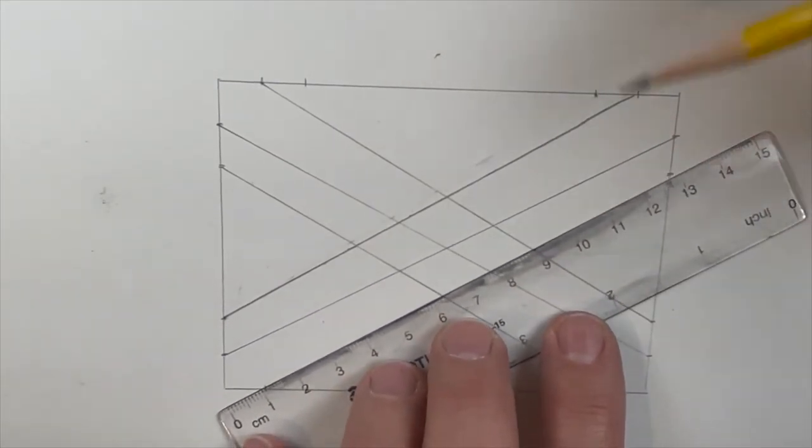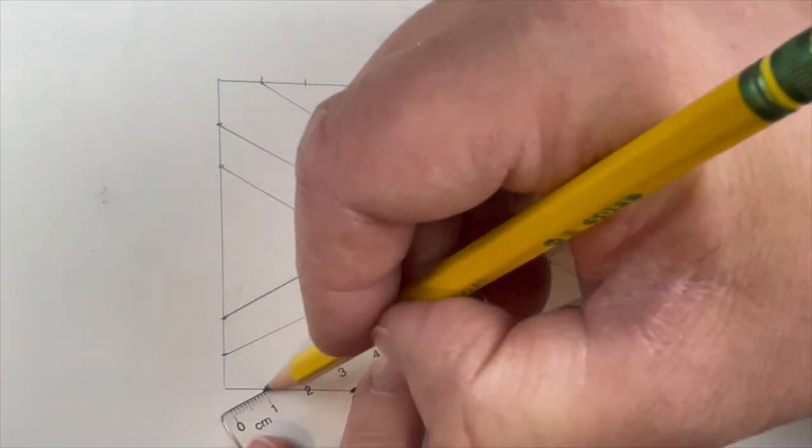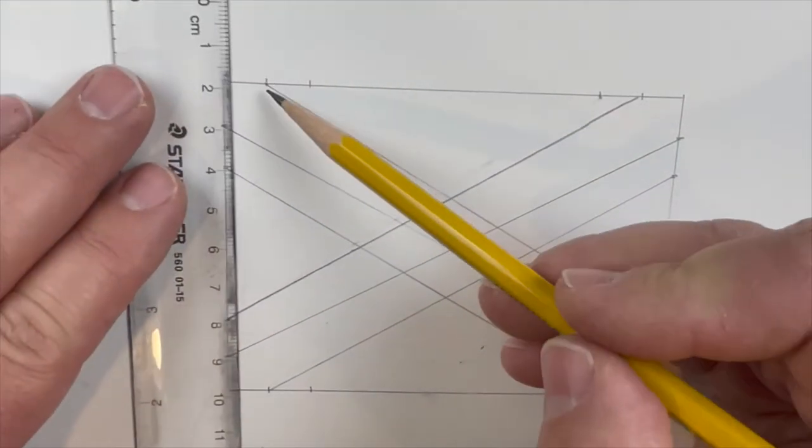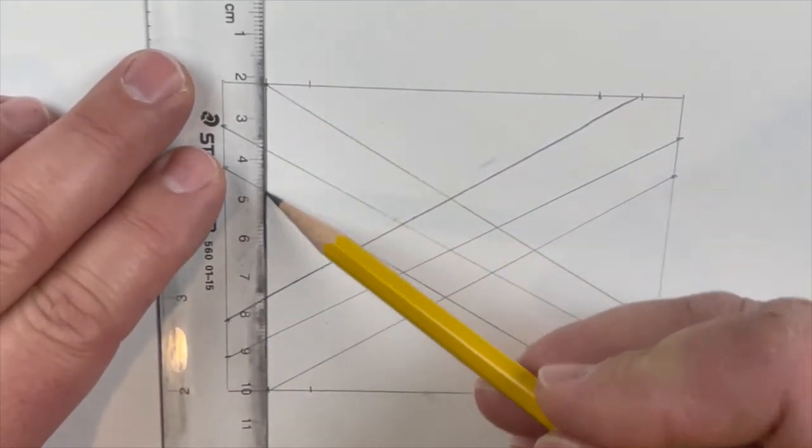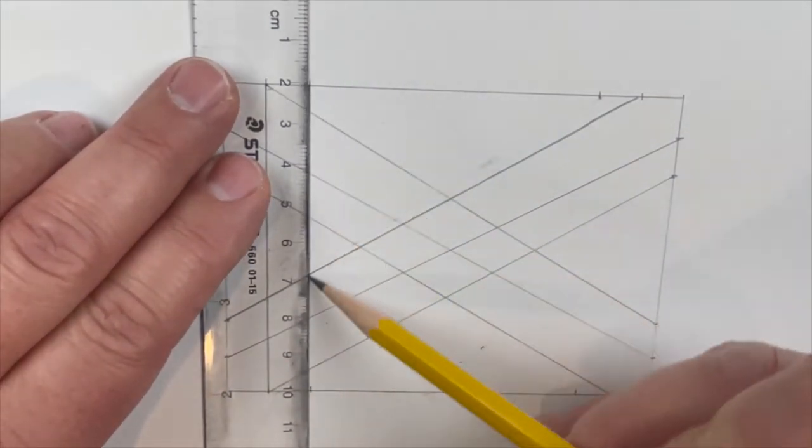Alright, just one more connection here and then we're going to be done with the horizontal connections. And then the vertical connections are very very easy. You're basically going to connect straight down from this line to the other one centimeter line, from this line to the two centimeter line.